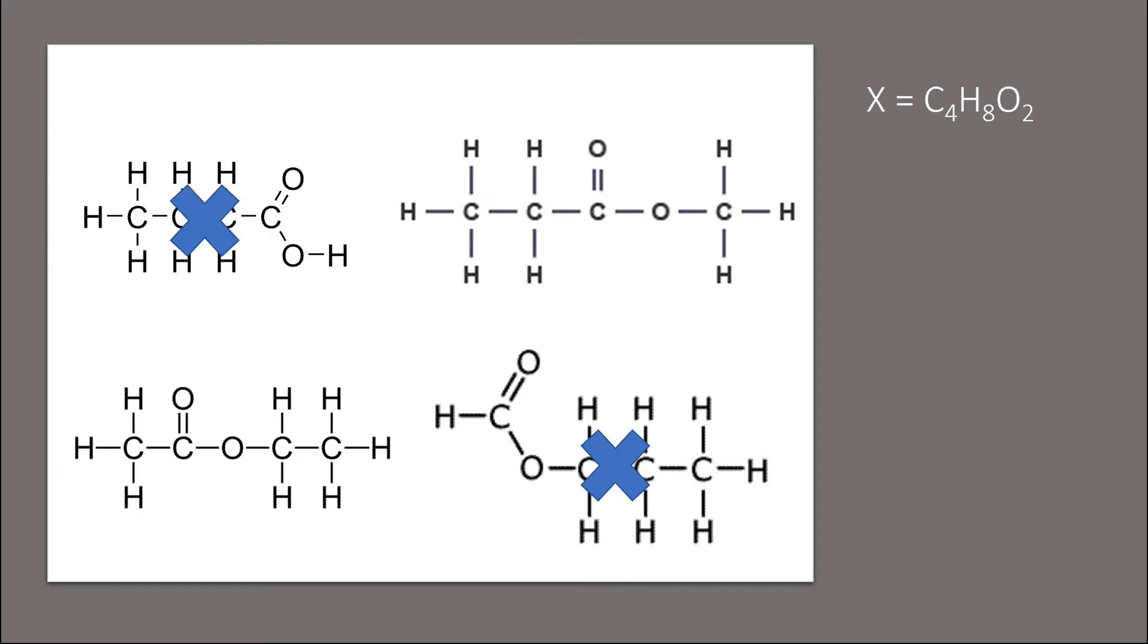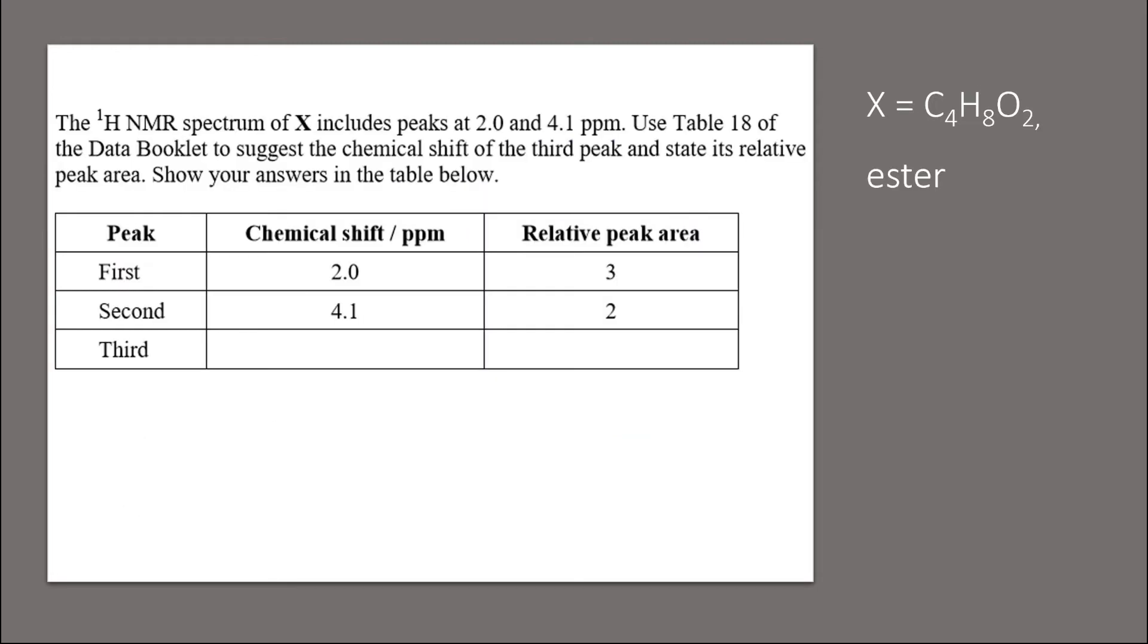Now the proton NMR tells us the number of different hydrogen environments and how many hydrogens are on the adjacent carbon atoms. The number of peaks represent the different hydrogen environments. The chemical shift tells us how close to electronegative atoms the hydrogen is. And the relative peak area represents the ratio of the number of hydrogen atoms in different environments.